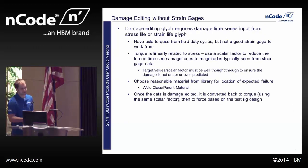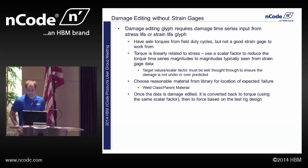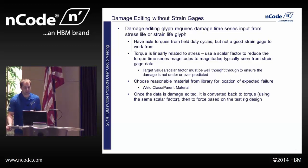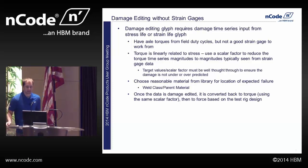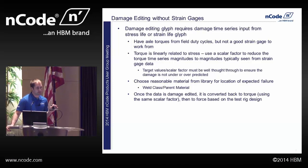Damage editing without strain gauges — this is where we had to use a little creativity. Since we didn't have a good strain gauge to work off of, and the damage editing glyph requires a damaged time series input — basically the output from a stress life or strain life glyph — we had to find another way. Since torque is linearly related to stress, I used a scalar factor to reduce the torque time series magnitudes to something you typically see from a strain gauge. Say we've got 2,500 foot-pounds of torque out of that axle — apply the scalar and maybe that's 25 KSI. You're just scaling the data so it can be used in the damage editing glyph.